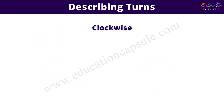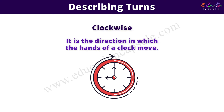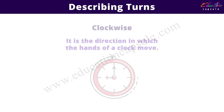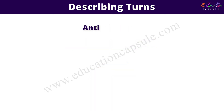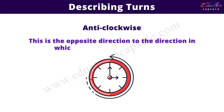Clockwise is the direction in which the hands of a clock move. Anticlockwise is the opposite direction to the direction in which the hands of the clock move.